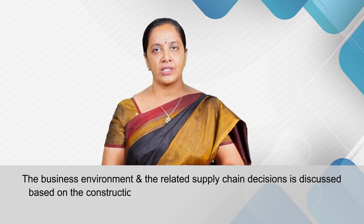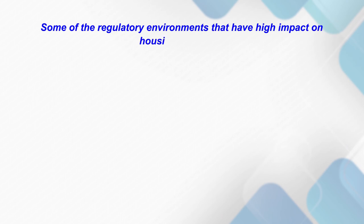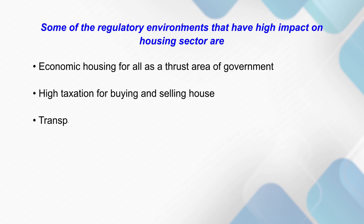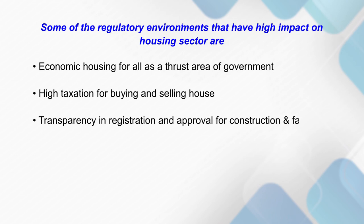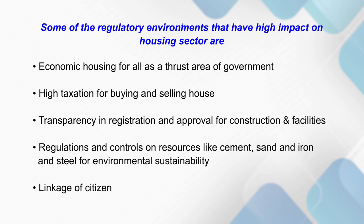The business environment and related supply chain decisions are discussed based on the construction industry, specifically the housing sector in India. Some key regulatory environments with high impact on the housing sector include: economic housing for all as a government thrust area, high taxation for buying and selling houses, transparency in registration and approval for construction, and regulations on resources like cement, sand, iron, and steel for environmental sustainability.